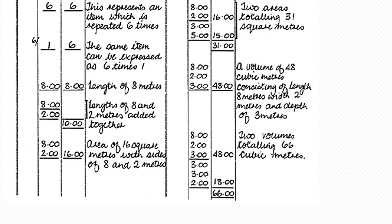If an item is repeated six times, you write six times one — the answer is six — or you can write just six. If the length is eight meters, you write eight in the dimension column and eight in the squaring column. If lengths of eight and two meters are added together, you write eight, underline it, then two, underline it. Underlining under the dimension means you are adding them, so you get ten in the squaring column.